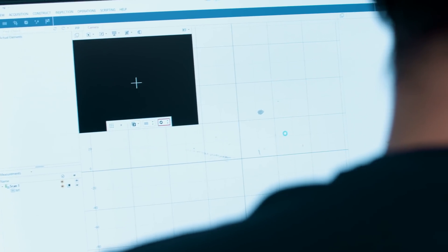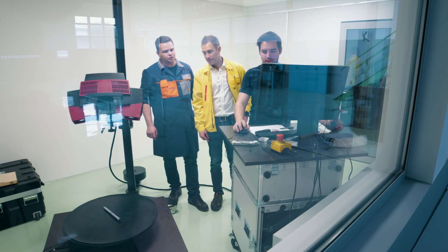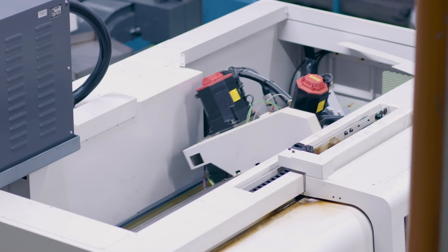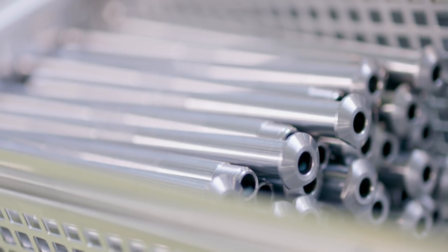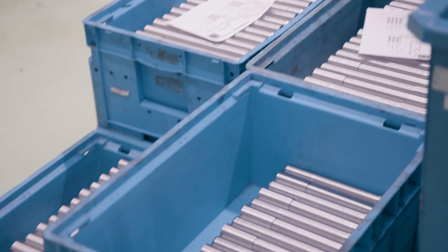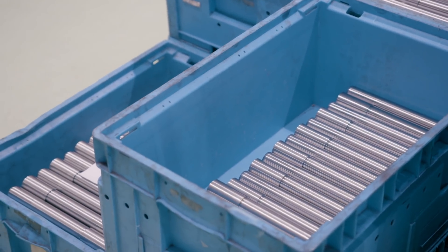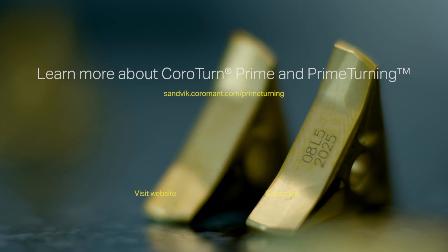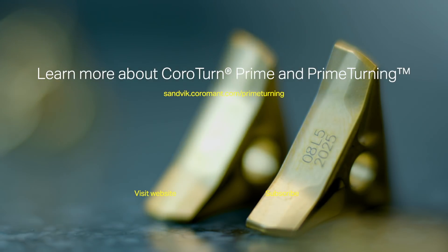After we started using prime turning tools, we achieved on one single turning machine savings of 1500 working hours per year on one single machine. Stoppages are down, productivity is up, customers are happy and so are we.